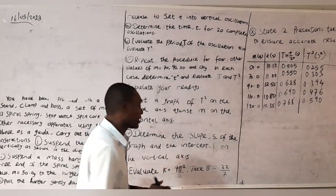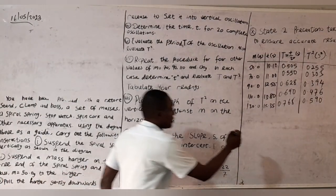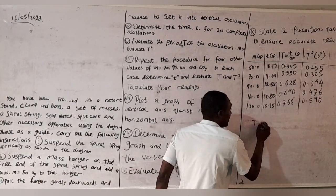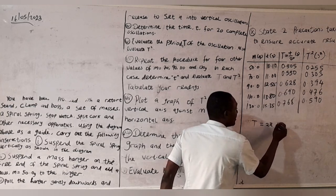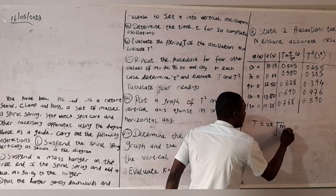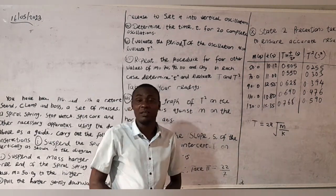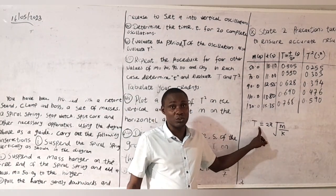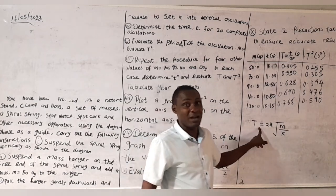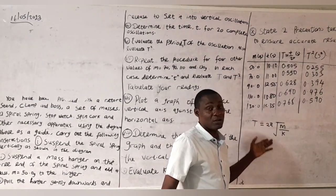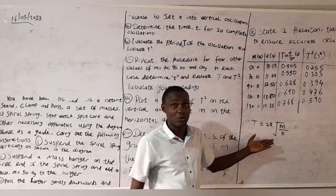Now, follow me. I know that you are familiar with this equation: T equals 2π square root of m all over k. This is the equation for the period of oscillation of a spiral spring.